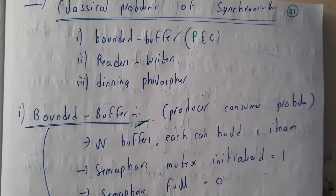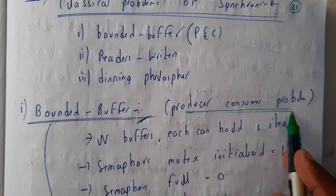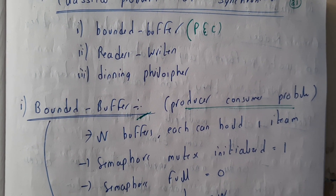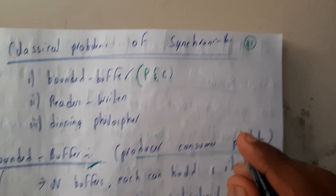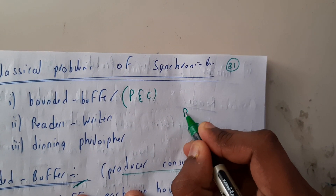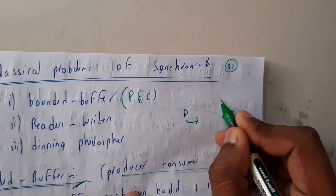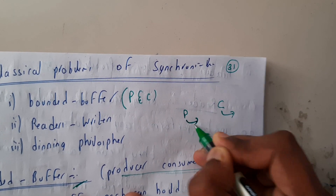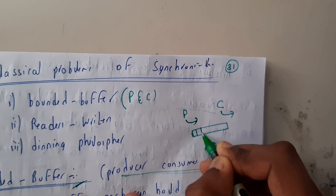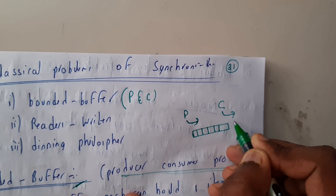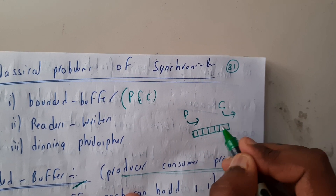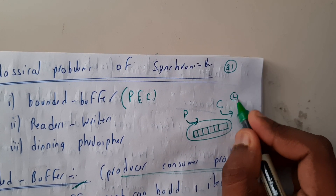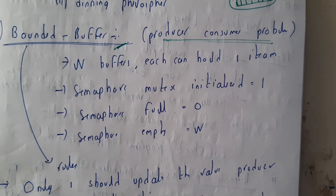The first problem is bounded buffer, also known as the producer-consumer problem. The producer can only produce items and the consumer can only consume items. The producer cannot produce when the buffer is full, and the consumer cannot consume when the buffer is empty. So there are basically four rules to this problem.